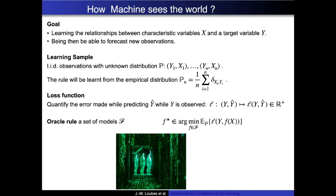The machine looks at the unknown distribution p of the couples of variables, the target y_i and the variables x_i. They don't know this distribution, but they have access to observations following the empirical distribution p_n. The aim of machine learning is to design a model — a function f taken from a collection of models F — that minimizes a criterion in mean. The criterion measures how close a forecast ŷ is to the observation y via a loss function l, which is zero when y equals ŷ. If you knew how the data were generated, you would build the oracle f*, which minimizes the loss over all possible data distributions.